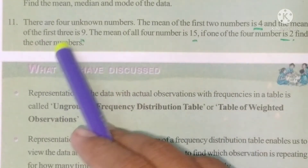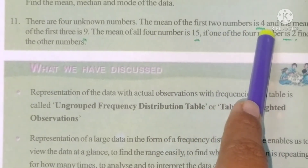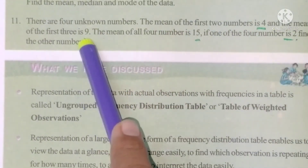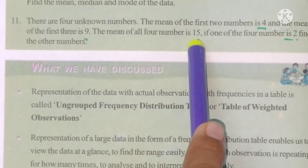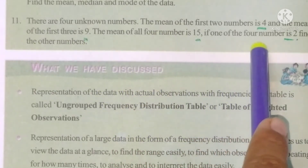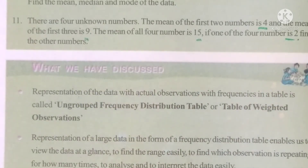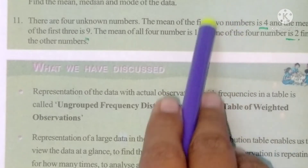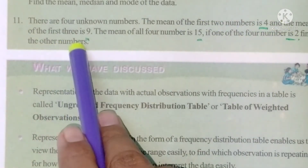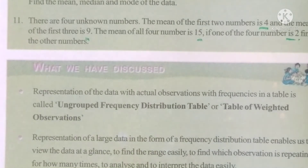Eleventh problem: there are four unknown numbers. The mean of the first two numbers is 4, the mean of the first three is 9, and the mean of all four numbers is 15. If one of the four numbers is 2, find the other numbers. We want to find out all the numbers.